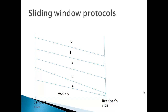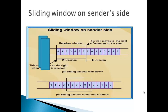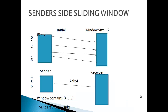Sliding window on the sender's side. Initially, n minus 1 frames are in the sender's window. After sending some frames, the sender's window shrinks. After it receives acknowledgement from the receiver, the sender's window expands back to n minus 1 and then again sends frames. This process continues till all frames are sent. For example, if the window size is 7, and 4 frames are sent,